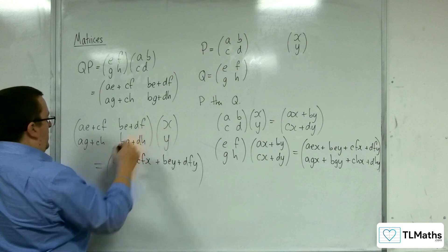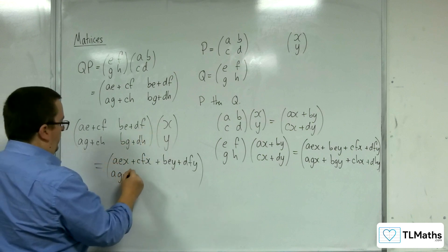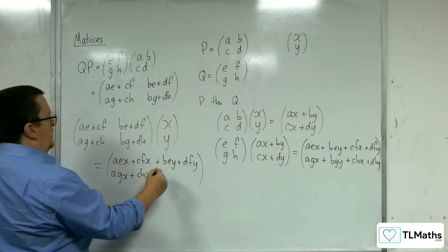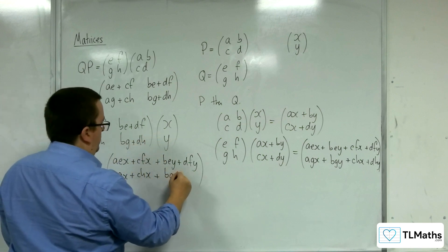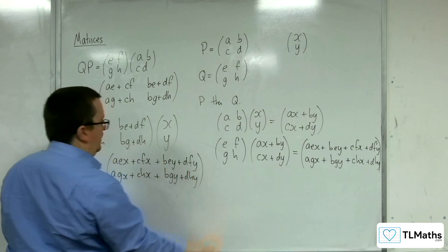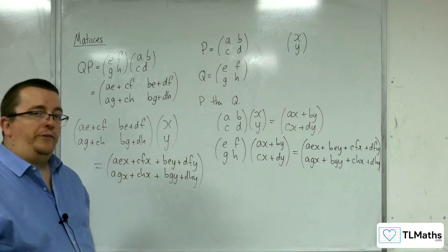And then A, G plus C, H times X. So A, G, X plus C, H, X plus B, G plus D, H times the Y. And these two, as you can see, are the same.